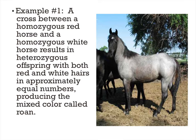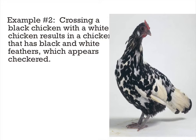A roan horse is an example of co-dominance. If you look at the individual hairs, you will see that they are either pure white or pure red. So if you ever see anything about a roan horse, that is co-dominance — the heterozygous produces red and white hairs called roan. Black and white checkered chickens would also be co-dominance. If you had a black and white parent and got a gray chicken, that would be incomplete dominance, but the checkered appearance is co-dominant.